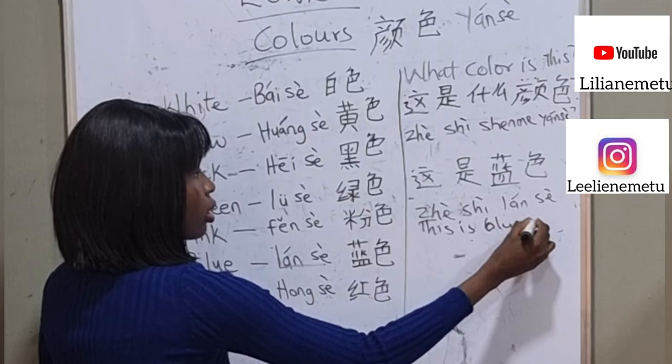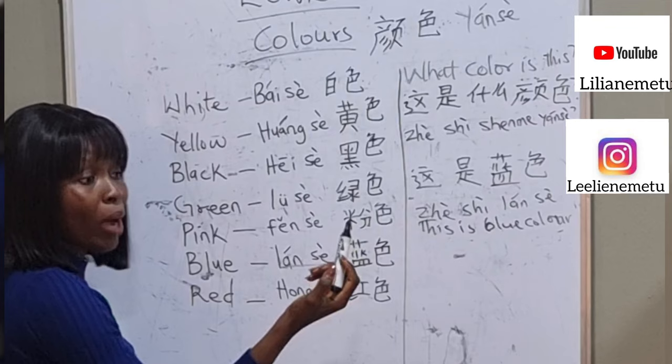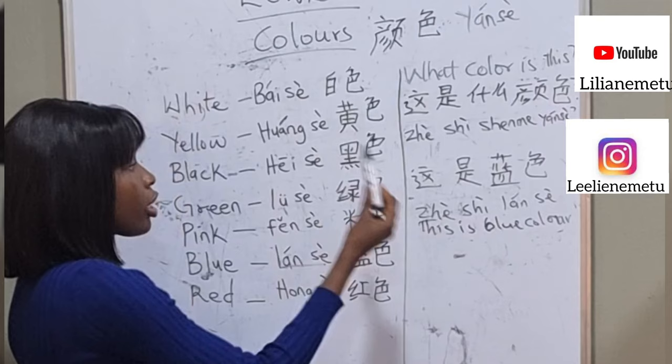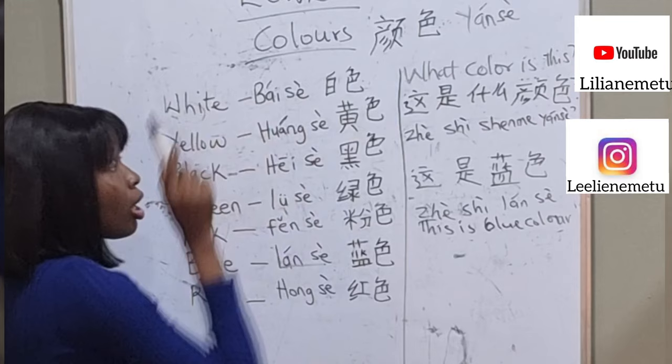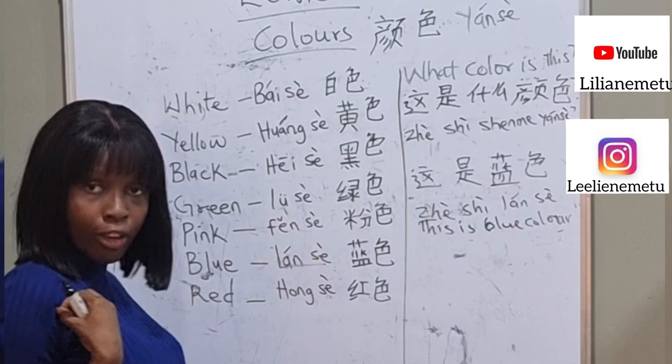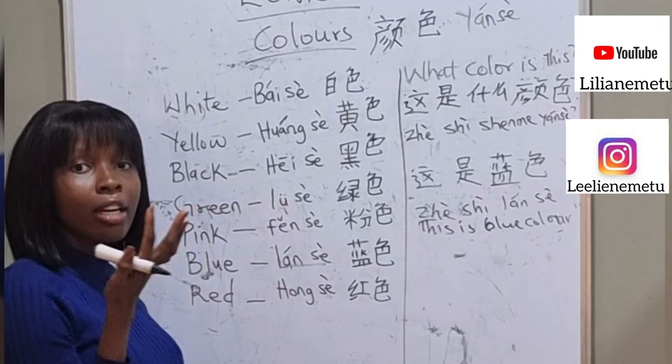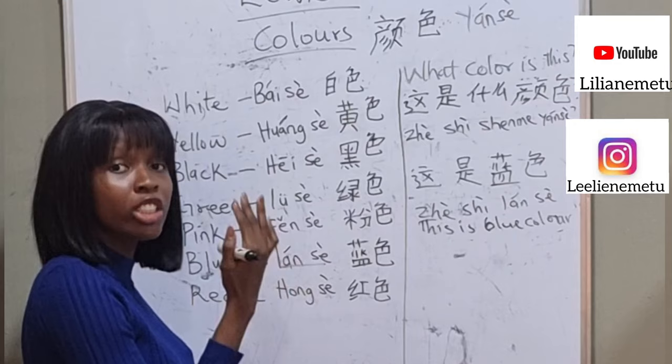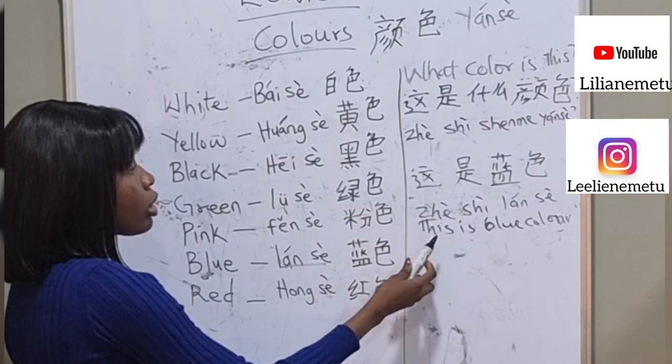So next, maybe someone asks you about white. What color is this? And you say this is white color — 'Zhè shì bái sè.' You can also add the color to any noun, for example: lán sè de — blue cloth, blue pen. You just add the color to whatever noun you're describing.